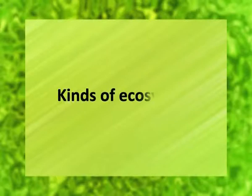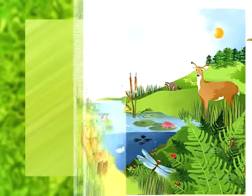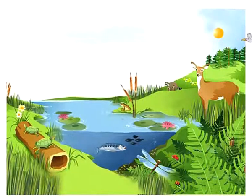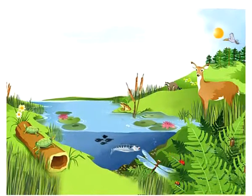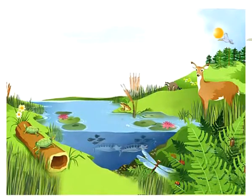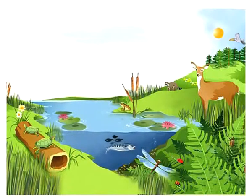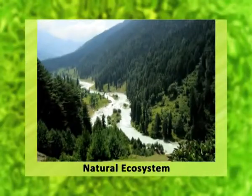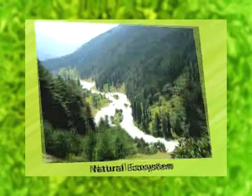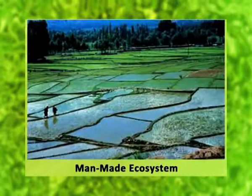Now, kinds of ecosystems. Ecosystems are classified on the basis of habitat. There are two major kinds of ecosystems: number one, natural ecosystem, and number two, man-made or artificial ecosystem.